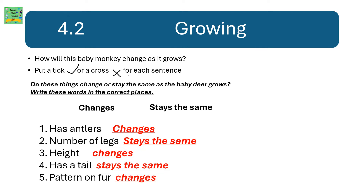4.2 Growing. How will this baby monkey change as it grows? Put a tick or a cross for each sentence. Do these things change or stay the same as the baby deer grows? Write these words in the correct places: changes and stays the same.